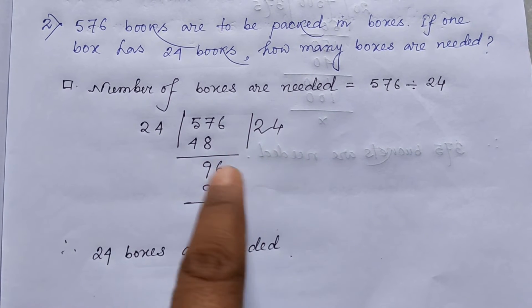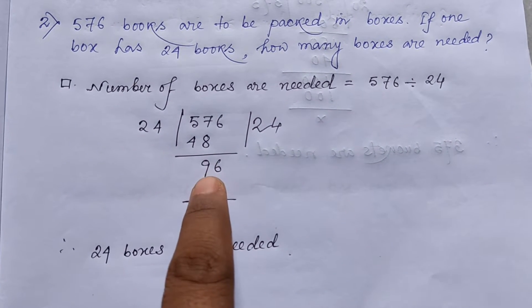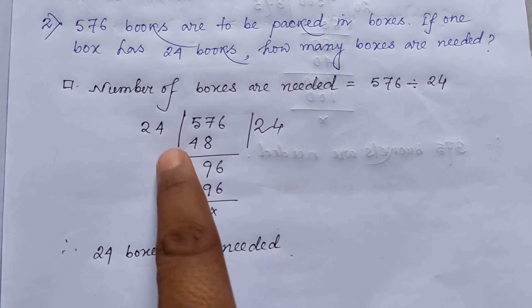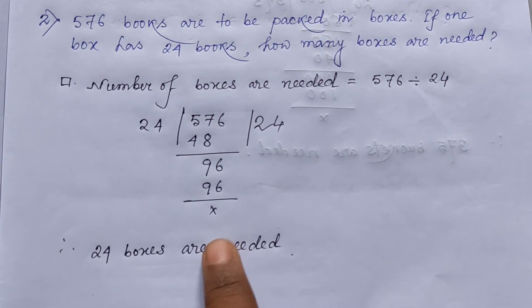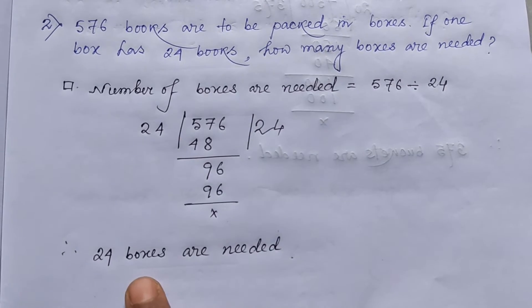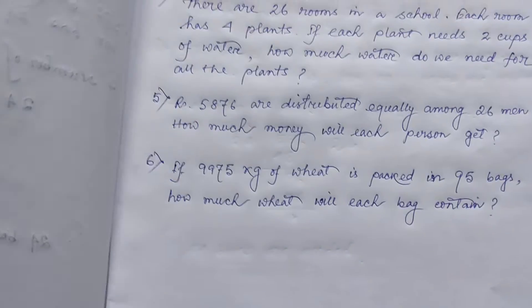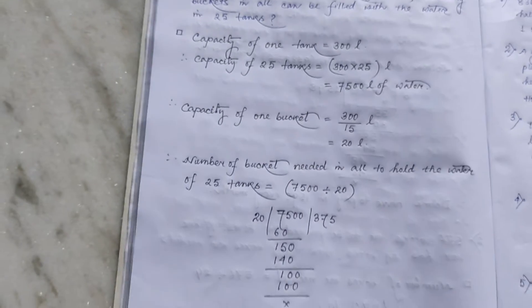So 24 to the 48, 9 is remainder. Then 6 comes 96. 4 24s are 96. So ultimately 24 boxes are needed. Now come to the third number.